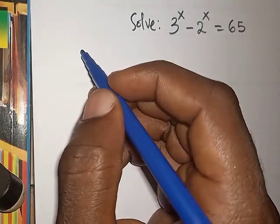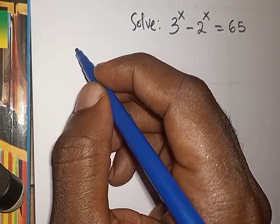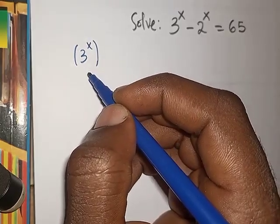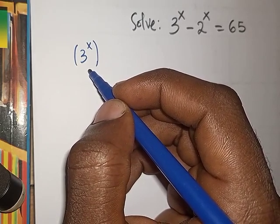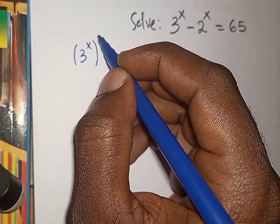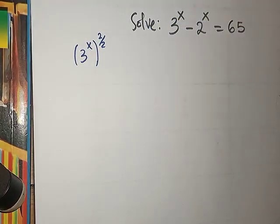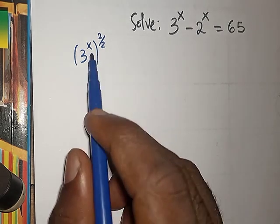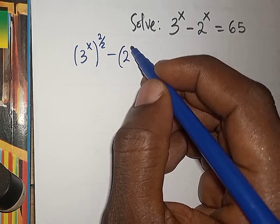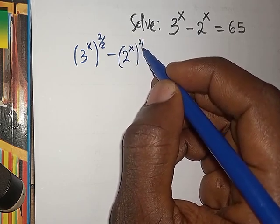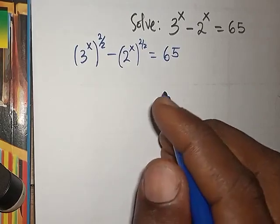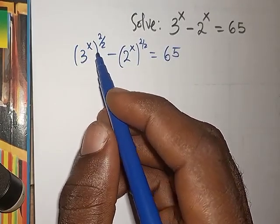I'm going to rewrite this equation in a different form. I want to introduce something like the difference of two squares. To do that, I can multiply the exponent x by 2 over 2 — since 2 over 2 equals 1, it doesn't change anything. So 3^x becomes 3^(x · 2/2), and similarly for 2^x. The equation still equals 65.